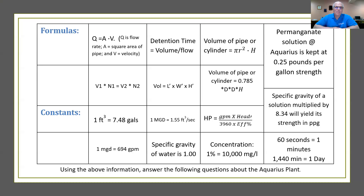The other table is formulas and constants. I've put some information in here that's a little different from the other videos — stuff that you need. For example, the permanganate solution strength is 0.25 pounds per gallon. Specific gravity of solution is there as well, along with some other formulas. You can refer back to these as you need them. Using the above information, pick out the right data and answer the following questions about the Aquarius plant.